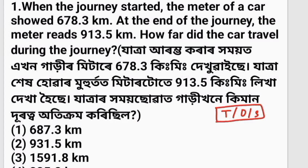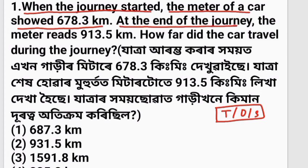Our first question is: when the journey started, the meter of a car showed 678.3 km. At the end of the journey, the meter reached 913.5 km. How far did the car travel during the journey?